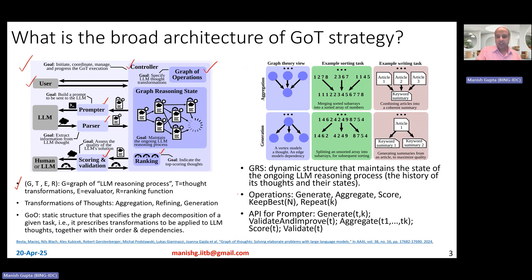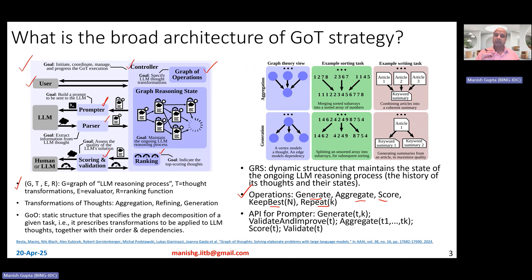Once the user provides their task, the graph of operations gets into operation. It figures out the first operation — for example, taking a 64-element list and generating four chunks. This is given to the LLM via the prompter, which provides the current graph reasoning state along with the operation definition and the appropriate prompt. Possible operations include generation, aggregation, scoring, keeping the best out of top-k, or repeating operations. Once the LLM is prompted and produces output, the parser parses those outputs.